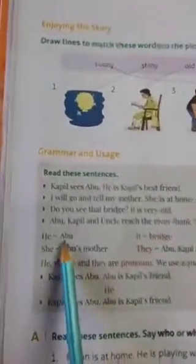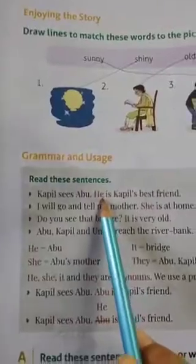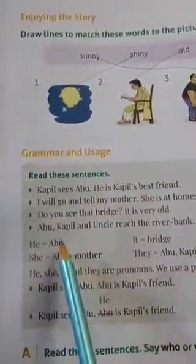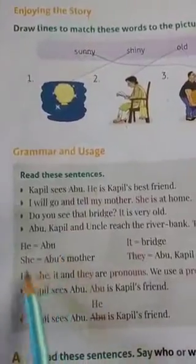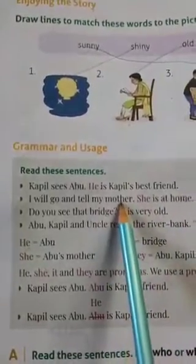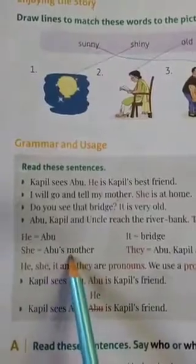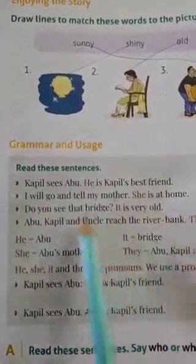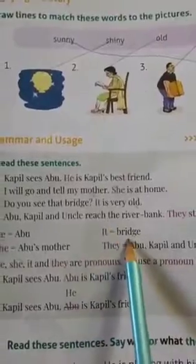So he, she, it, they are pronouns. In sentence number 1, he is colored in red. He means Abu — Kapil sees Abu, he is Kapil's best friend, so he means Abu. In the second one, I will go and tell my mother, she is at home — we are discussing about mother, so she means Abu's mother. Do you see that bridge? It is very old — here we are describing about the bridge, so it means bridge.